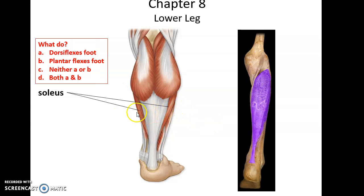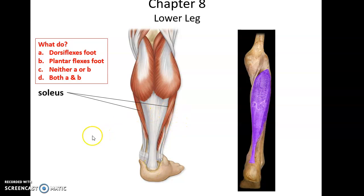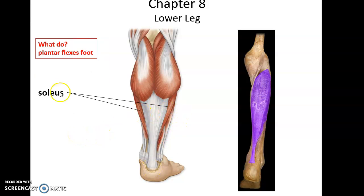Underneath, or deep to, gastrocnemius is another muscle called soleus. Soleus only crosses the ankle joint, so it helps to plantar flex the foot — allowing us to stand on tiptoes. And that is it for this Chapter 8 lecture.